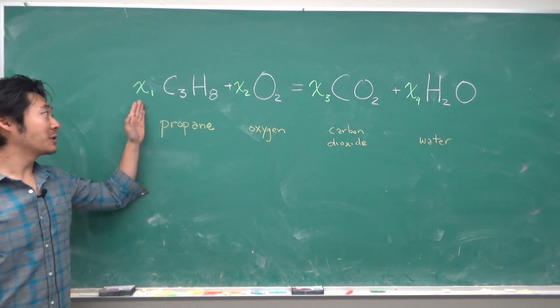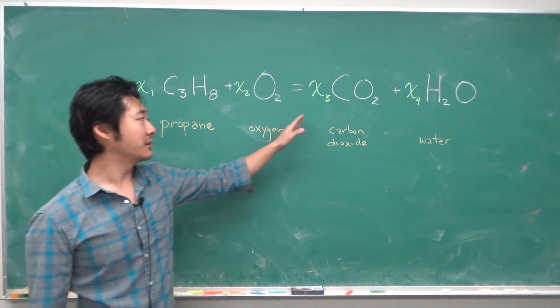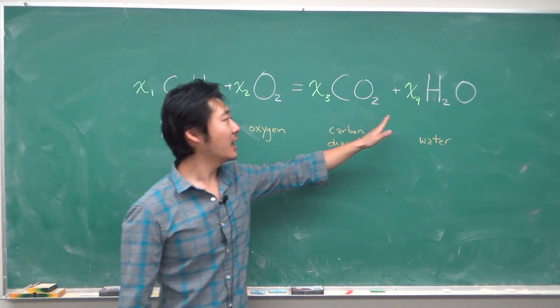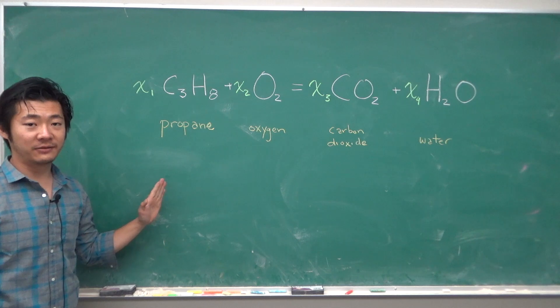And so we will have X1 many propane, X2 many oxygen, X3 many carbon dioxide, and X4 many water. So how can we figure out how much of each chemical is required?